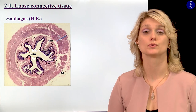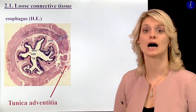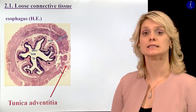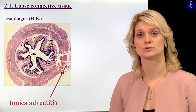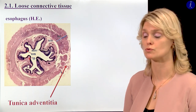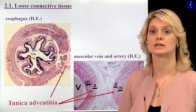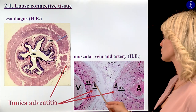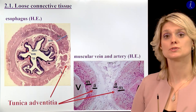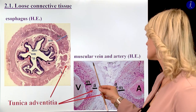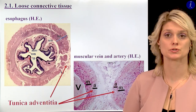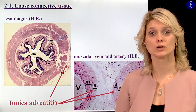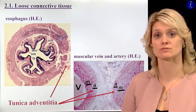Another important function of loose connective tissue is to form different layers and surroundings of organs. For example, the esophagus is covered by a connective tissue layer called tunica adventitia. Organs which are not covered by peritoneum always have a tunica adventitia as the last layer of the organ wall. We can also find tunica adventitia in middle-sized vessels — it is the outermost layer — alongside tunica intima (innermost) and tunica media (where we have smooth muscle).